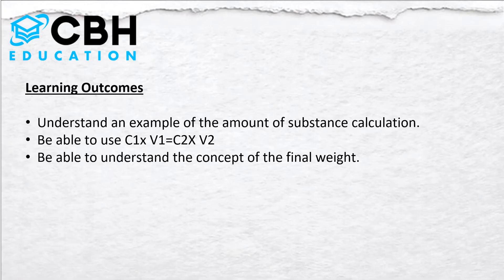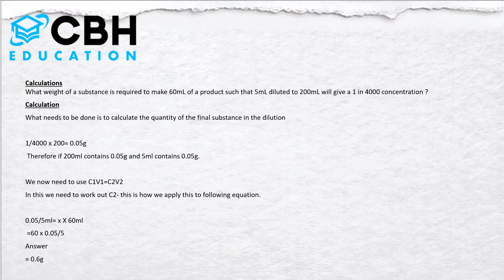The learning outcomes are: understand an example of the amount of substance calculation, be able to use C1 times V1 equals C2 times V2, and be able to understand the concept of the final weight.